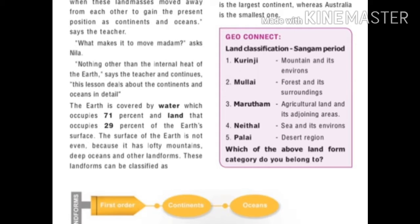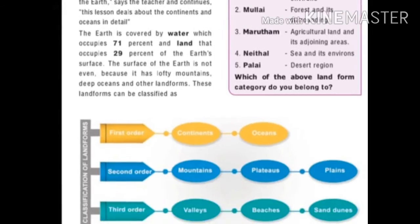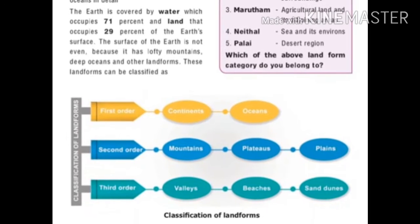There are lofty mountains, deep oceans and other landforms. Landforms can be classified into orders. 1st order includes continents and oceans. 2nd order includes mountains, plateaus and plains. 3rd order includes valleys, beaches and sand dunes.